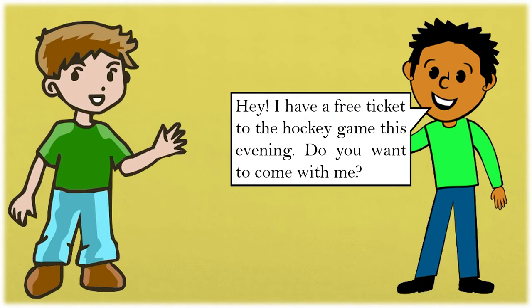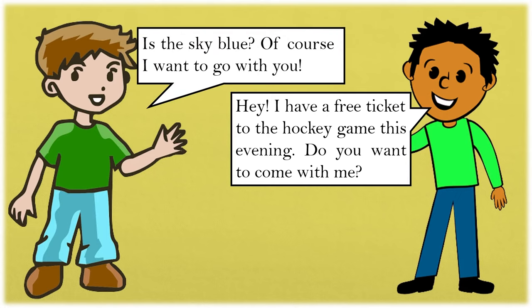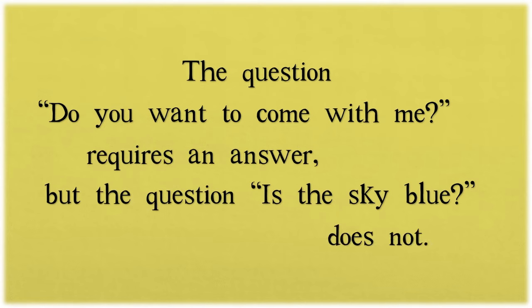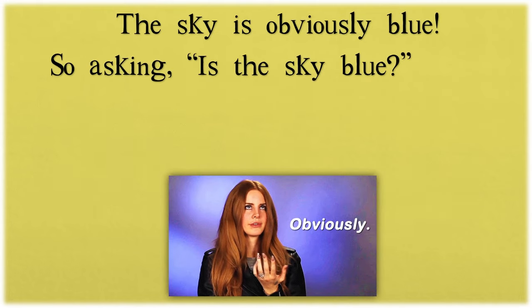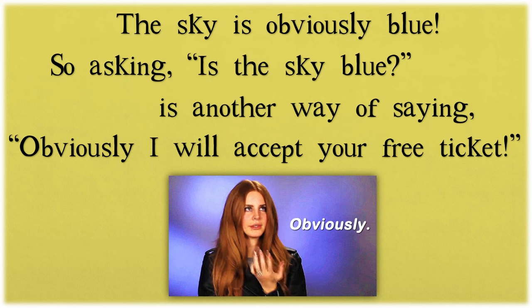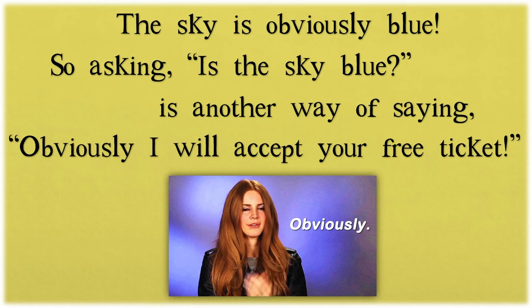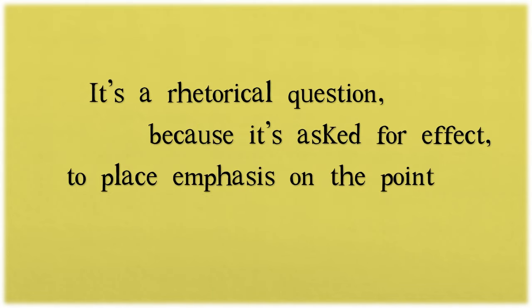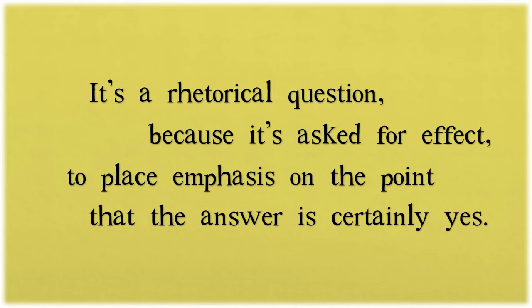For example: 'Hey, I have a free ticket to the hockey game this evening. Do you want to come with me?' — 'Is the sky blue? Of course I want to go with you.' The question 'Do you want to come with me?' requires an answer, but 'Is the sky blue?' does not. The sky is obviously blue, so asking 'Is the sky blue?' is another way of saying 'Obviously I will accept your free ticket.' It's a rhetorical question asked for effect, to place emphasis on the point that the answer is certainly yes.